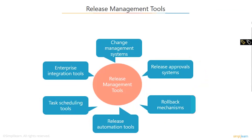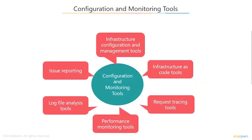Configuration and monitoring tools — people from an operations background will be very familiar with these. There are a whole bunch of different configuration and monitoring tools used in production or UAT environments that production support teams have been looking after. We will cover infrastructure configuration and management, infrastructure as code tools, request tracing tools, and performance monitoring tools, looking at specific software — what they do, what they allow you to do, and how they help you analyze the performance of an application or website.